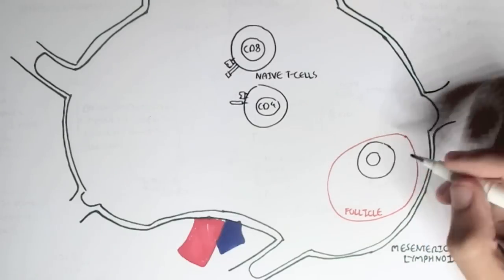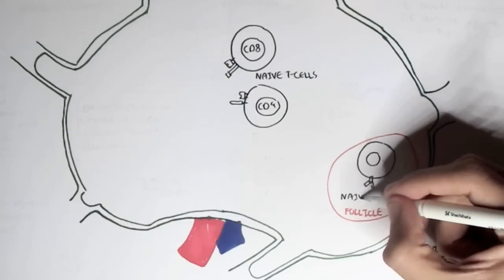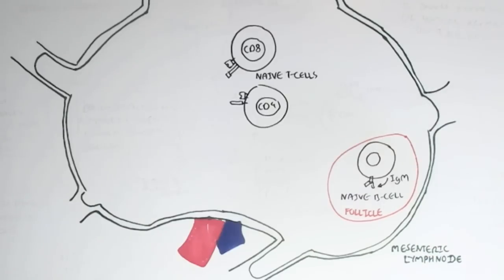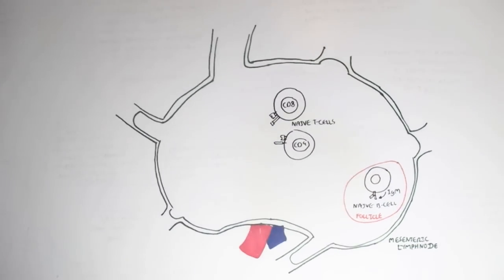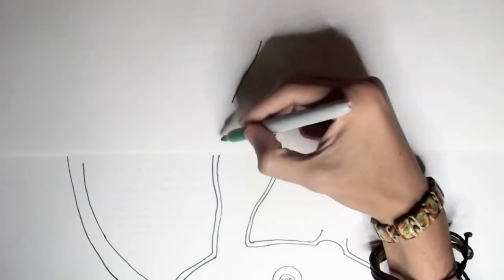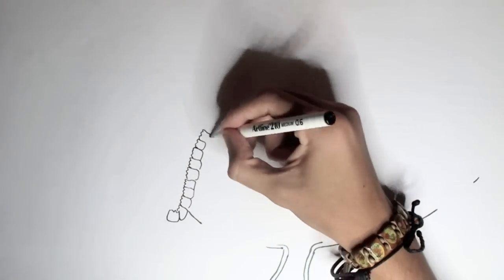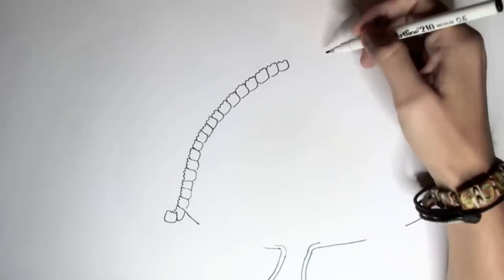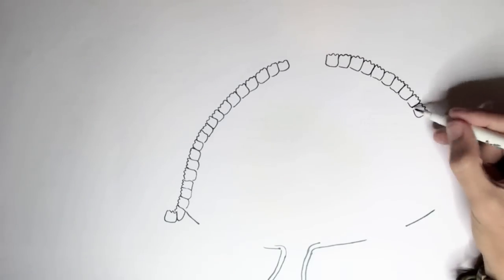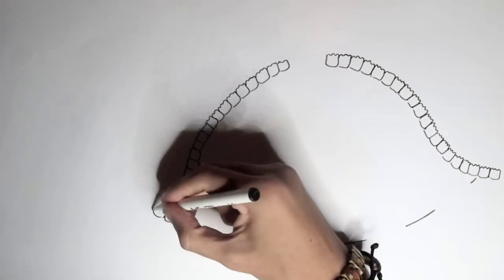There are areas in the lymph node known as follicles, where naive B cells reside. These naive B cells typically express IgM and sometimes IgD antibodies. The mesenteric lymph nodes connect with areas around the gastrointestinal tract, and here we have the lymph vessel connecting to regions around the body, especially to regions below the mucosal surface of the gut.